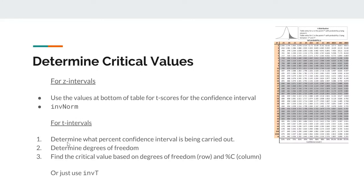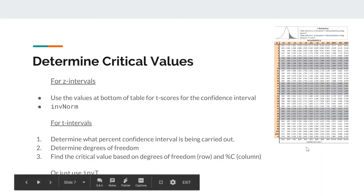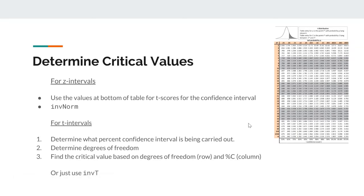When you are trying to determine critical values for a Z-interval, there are two ways you can do it. The first way is to use the values at the bottom of the table for T-scores for the confidence interval. Say for example you have a 90% confidence interval. You look at the number directly above your 90% here on the T-table, and that's 1.645. That is your critical value. Don't worry about degrees of freedom for a Z-interval, because Z-intervals do not use degrees of freedom.